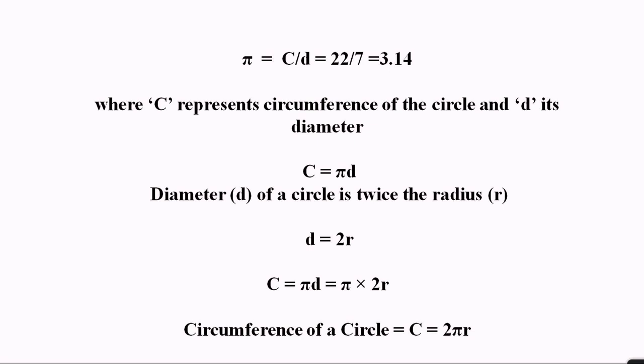Here, C represents circumference and d represents diameter. We also discussed that diameter is always double the radius. So the formula for circumference of circle becomes C = πd or we can say C = 2πr.